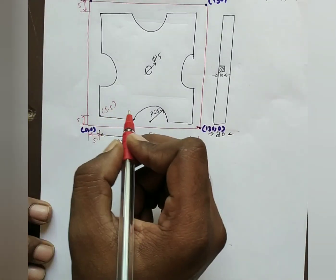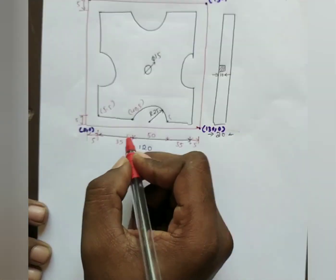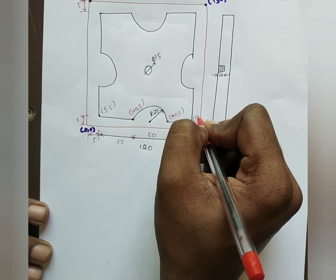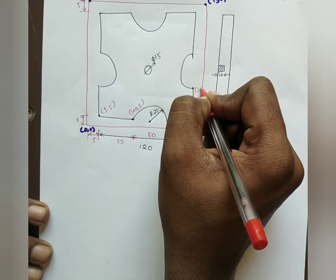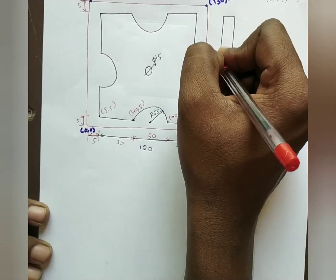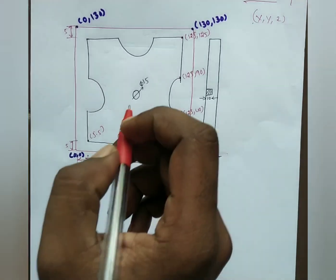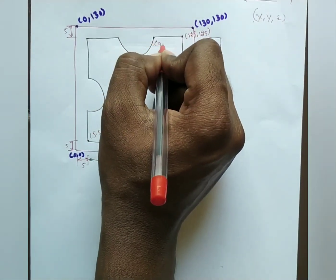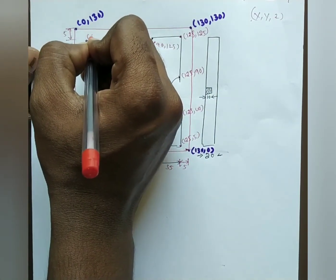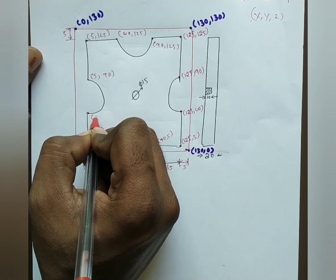At this point x is 5, y is 5. At this point x is 40, y is 5. At this point x is 90, y is 5. At this point x is 125, y is 5. At this point x is 125, y is 125. At this point x is 90, y is 125. At this point x is 40, y is 125. At this point x is 5, y is 125. At this point x is 5, y is 90. At this point x is 5, y is 40.